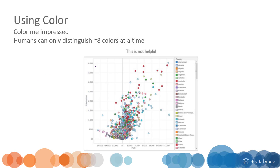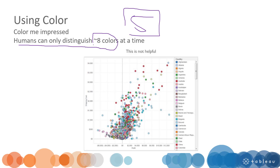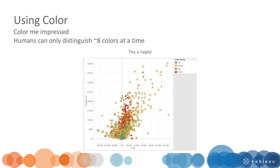As mentioned, try to limit the number of colors to fewer than five. Studies indicate that humans can only distinguish about eight different colors at a time, but using too many makes your visualization messy and hard to interpret — you can't even remember what each color represents. Keep your color count small for a better, clearer visualization.